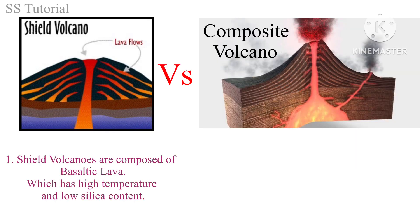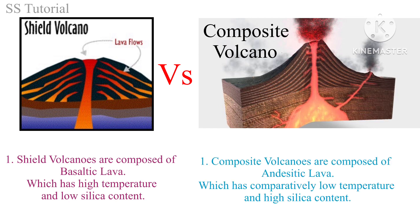Shield volcanoes are composed of basaltic lava, which has comparatively high temperature and low silica content. Whereas composite volcanoes are composed of andesitic lava, which has comparatively low temperature and high silica content.